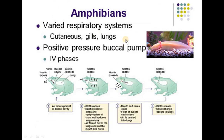If we look at the lungs of amphibians, the amphibian respiratory system can respire through three types: cutaneous respiration, gills, and lungs.